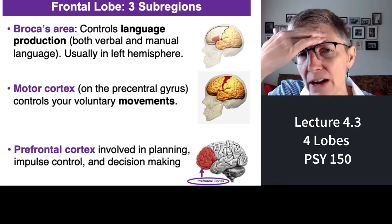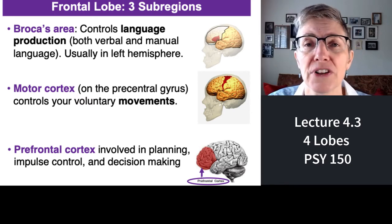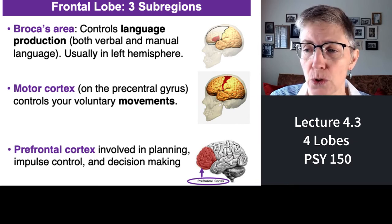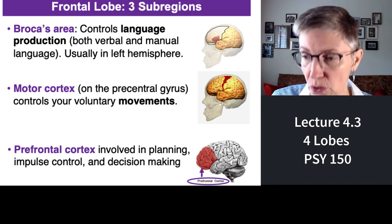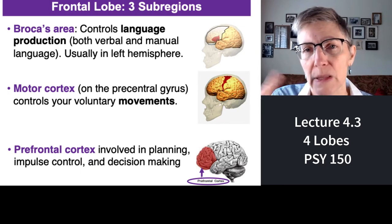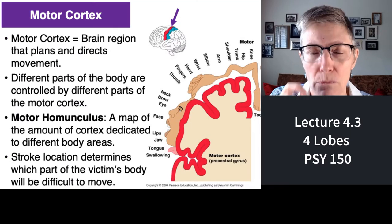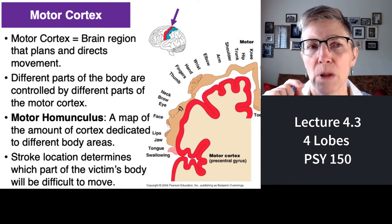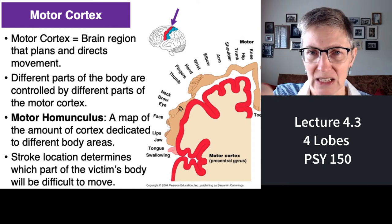At the very front of your frontal cortex, we call that the prefrontal cortex. That's really where impulse control and decision-making happen. The motor cortex plans and carries out voluntary movements — for example, when I reach out to click something.